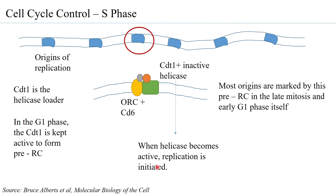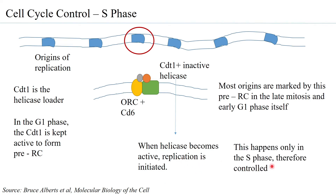Replication is initiated only when the inactive helicase becomes active. Until CDT1 is bound at the origin with the inactive helicase, the complex is ready for initiation but has not yet begun. The moment it gets a signal, replication will start. The helicase becomes active only in the S phase, so something in the S phase must be controlling this activation.